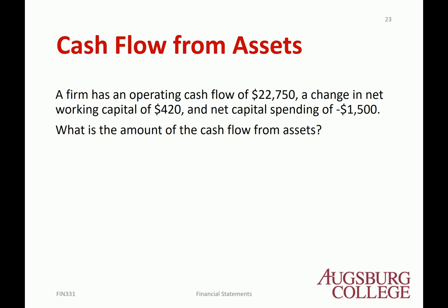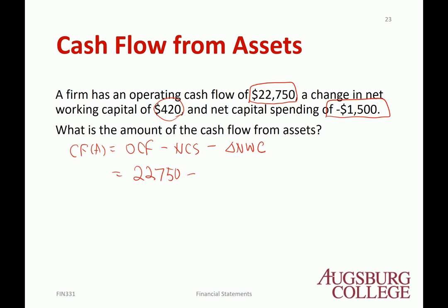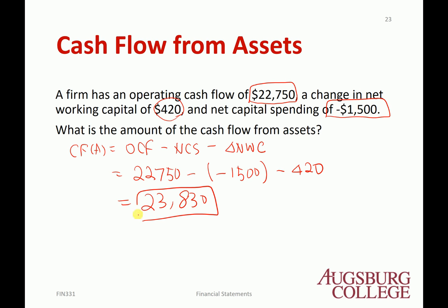Let's wrap up cash flow from assets. The firm's operating cash flow is $22,750, change in net working capital is $420, and net capital spending is negative $1,500. Cash flow from assets equals OCF minus net capital spending minus change in net working capital: $22,750 minus (negative $1,500) minus $420 equals $23,830. That's the cash flow from assets.